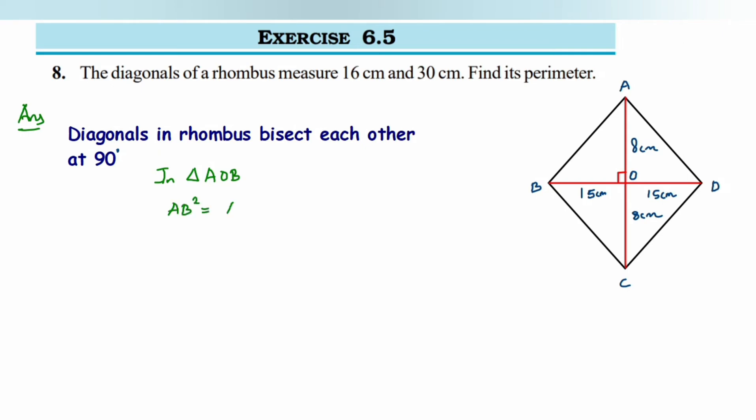AB square is equal to AO is 8, so 8 square plus 15 square. From here AB square is equal to 64 plus 15 square is 225. After adding 64 and 225 we'll get 289.